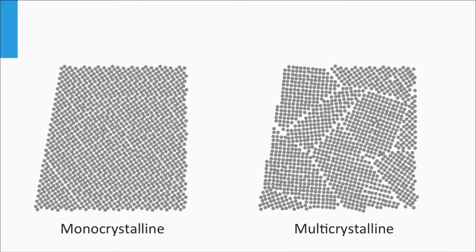In view of defects in the bulk of silicon, we can distinguish between two types of silicon wafers: monocrystalline silicon and multicrystalline silicon, also called polycrystalline silicon. Monocrystalline silicon, also called single crystalline, is a crystalline solid in which the crystal lattice is continuous and unbroken without grain boundaries over the entire solid up to the edges. In contrast, polycrystalline silicon, often abbreviated as polysilicon, consists of many small crystalline grains with random orientations and has grain boundaries between the grains.